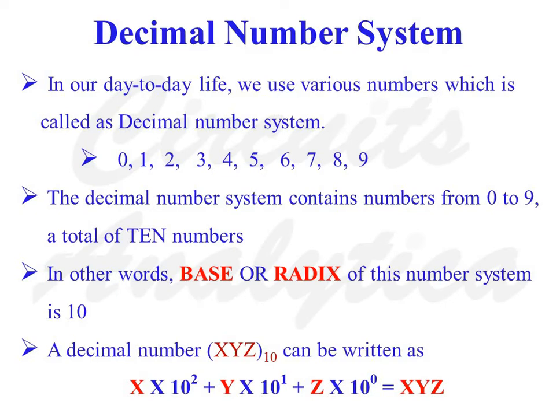In general, a decimal number can be written as x into 10 squared plus y into 10 raised to 1 plus z into 10 raised to 0, where 10 squared is the column weight or column value of digit x, 10 raised to 1 is the column weight of digit y, and 10 raised to 0 is the column weight of digit z. So this number can be represented as x into 100 plus y into 10 plus z into 1.